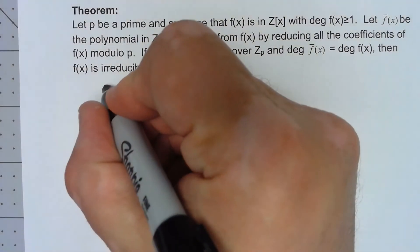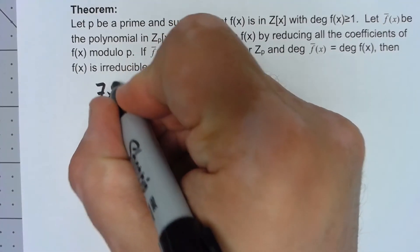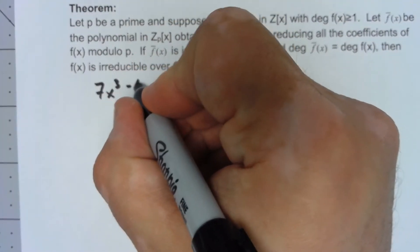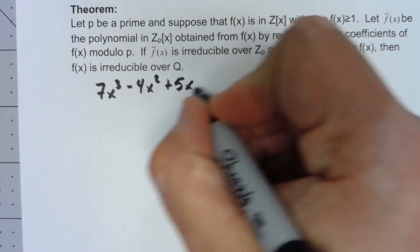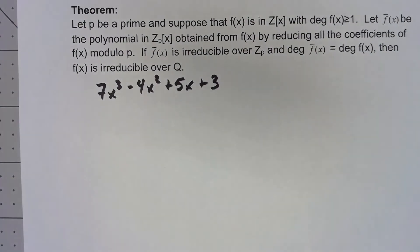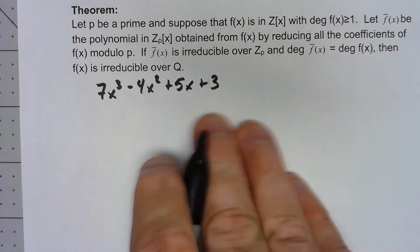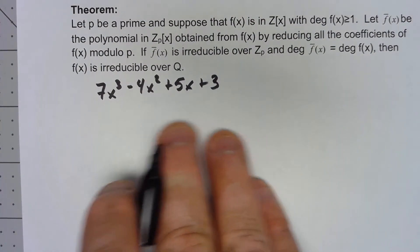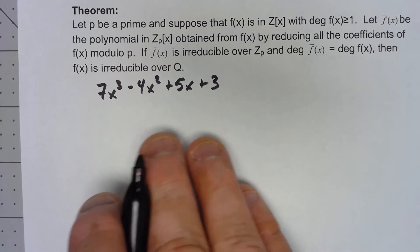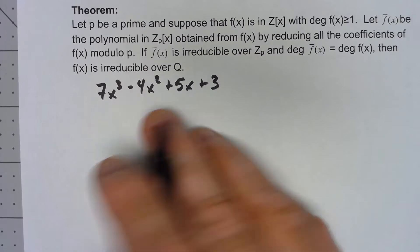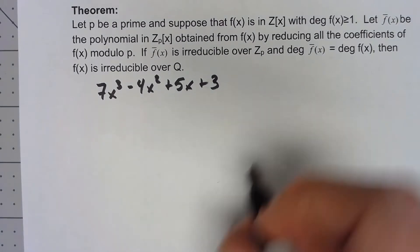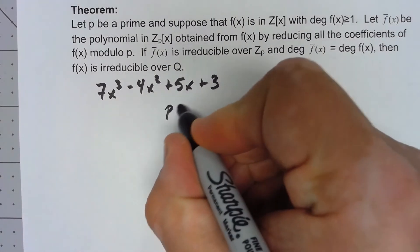Let's say I have the polynomial 7x³ - 4x² + 5x + 3. In general, it's very hard to tell if this thing is irreducible in the integers. However, let's go ahead and do this using p equals 2.